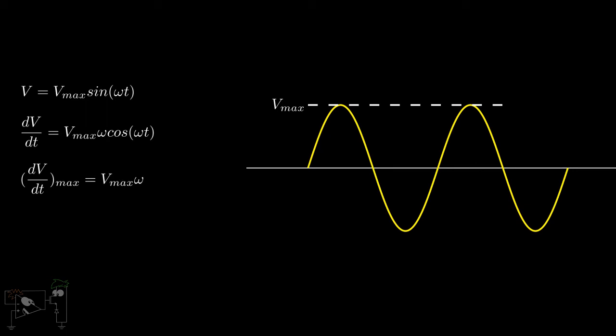Hence, we require an op-amp whose slew rate is greater than or equal to this value. ω can also be written as 2πf. Hence, minimum slew rate equals 2π times f times Vmax.